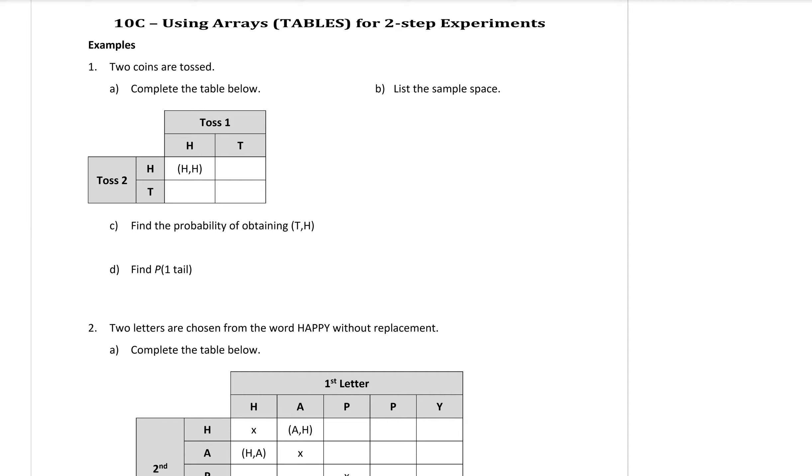So for example, in example number one here, two coins are tossed. On the top of this table is the results for the first time that I toss the coin. So toss number one I could get a head or a tail. The second time I toss the coins, this is the same experiment I'm doing a second time, I could also get a head or a tail.